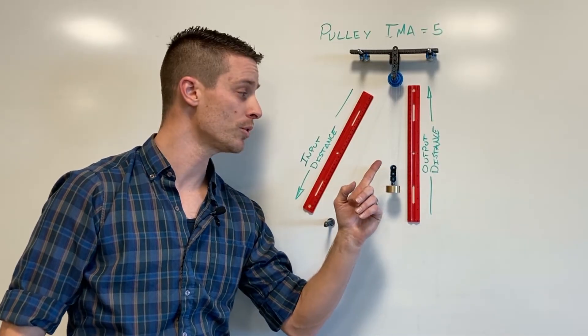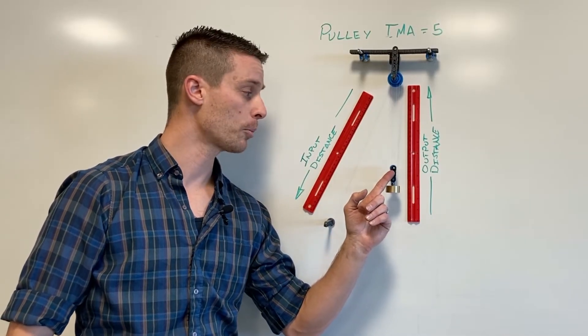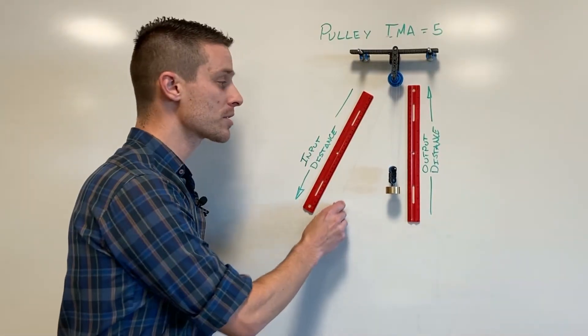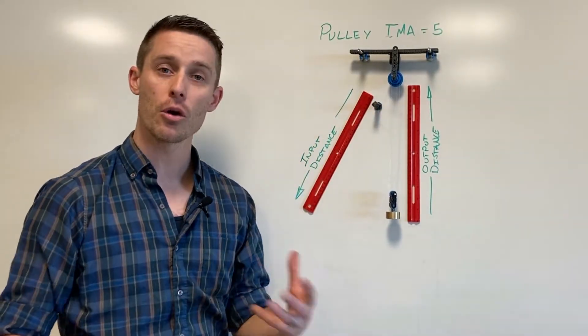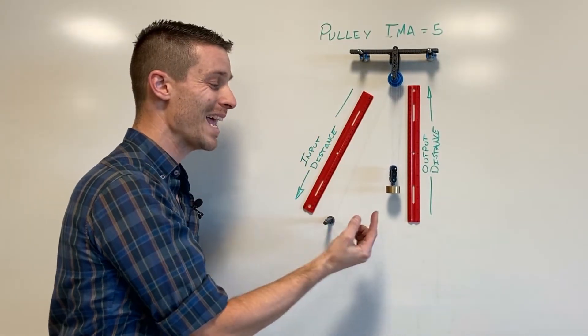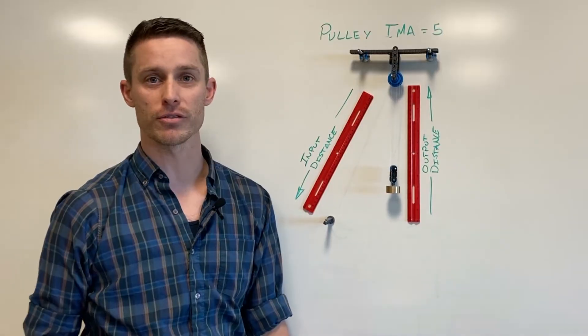So that tension of one Newton is going to act upward five times on this load. Ultimately what this does is multiplies the force with which I'm acting on this load. So I can put in one Newton of force and get out of it five Newtons of force.